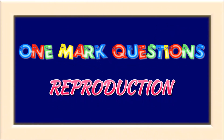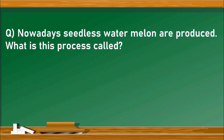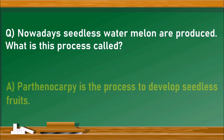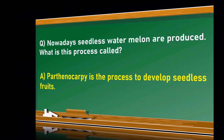The first question: nowadays seedless watermelons are produced — what is this process called? It refers to the process involved in the production of seedless fruits. It is parthenocarpy.